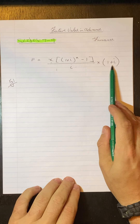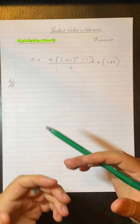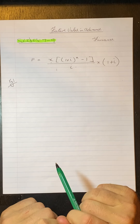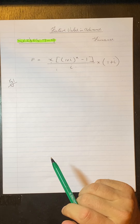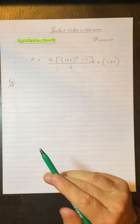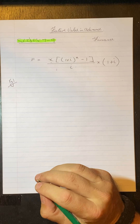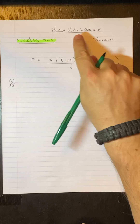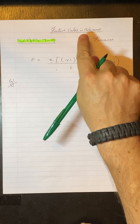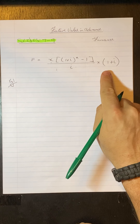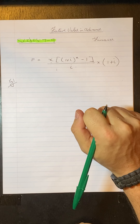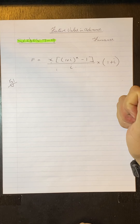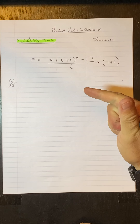So that's what it's doing — it's adding on that extra time period interest to your payment. For the future value in advance formula, you're looking for the keywords 'immediately' or 'beginning.'